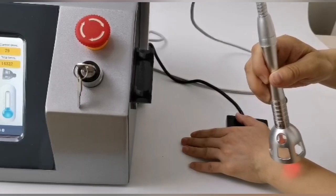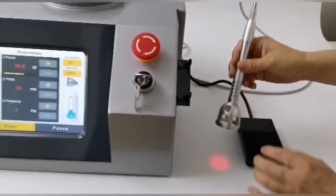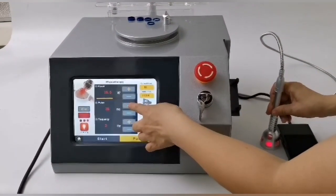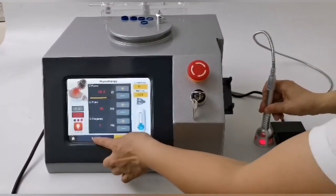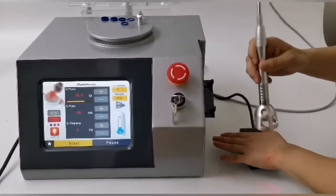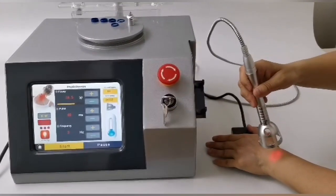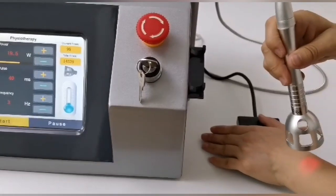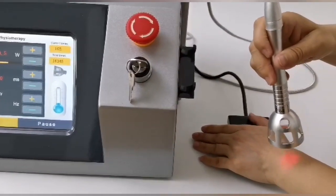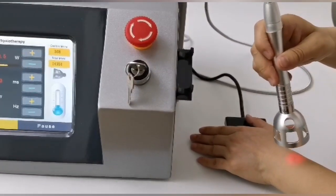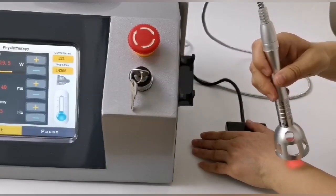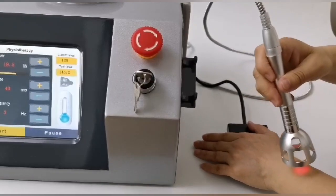In the course of treatment, we should constantly ask the customer's feelings, whether they can bear the degree. If the parameters are not appropriate, use the foot pedal, click the Pause button to go back to the stop state, and adjust the parameters. For example, increase the energy or pulse width a little, click again to start, and treat again.